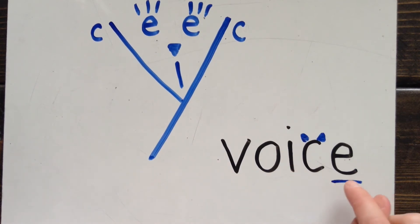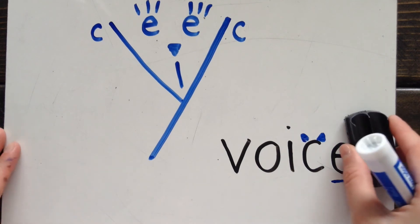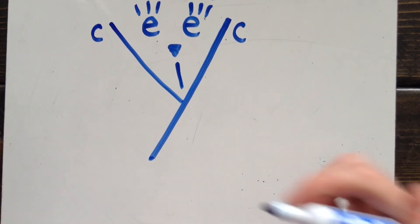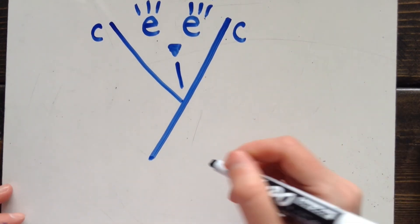Don't say voicey. The E is only there so that the C can become a cat. It doesn't make any sound.